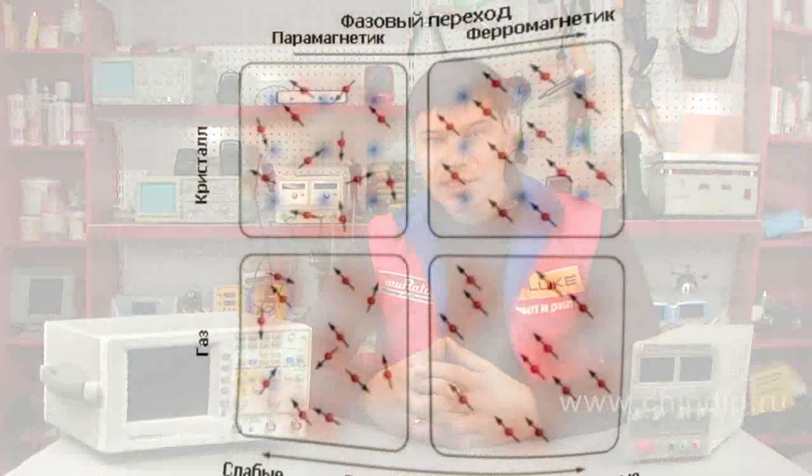The most famous paramagnets include palladium, platinum, and many other metals, alkaline and alkaline earth elements, as well as alloys of such metals, oxygen, nitrogen oxide, manganese oxide, ferric chloride,